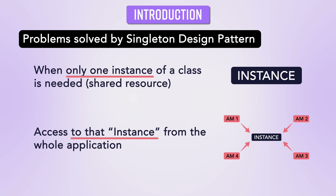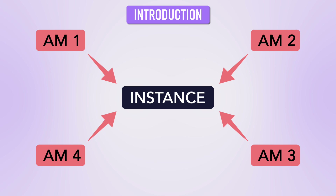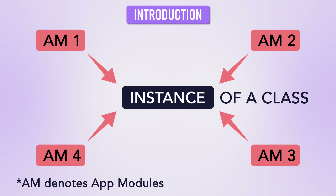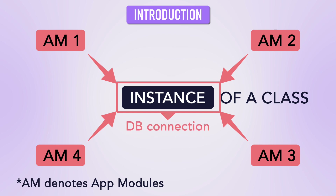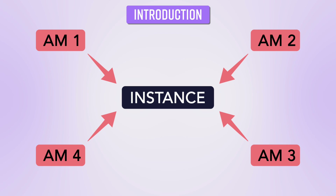If you try to visualize it, you have a particular instance or shared resource accessed by different app modules or sub-programs in your application. Examples of such shared resources could be a DB connection, a logger instance, or the Runtime class in Java. One might argue you can solve this problem by saving that instance in a global variable and allowing access from different application modules to it.